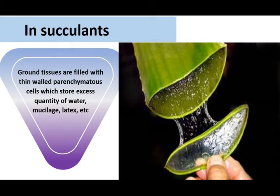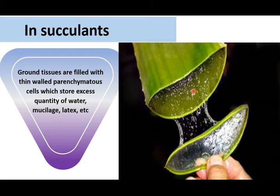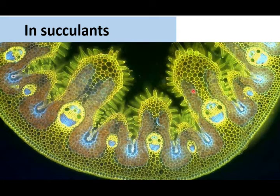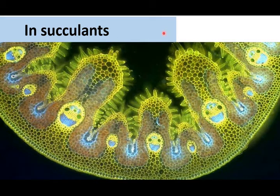Now we shall see the anatomical peculiarities in succulent stems and leaves. In succulent stems and leaves, the ground tissue is filled with thin-walled parenchyma cells which store excess water, mucilage, and latex, making the stem swollen and fleshy. In Aloe leaf sections, you can see mucilage oozing out when cut. In succulent leaves, spongy parenchyma develops extensively to store water and mucilage. The epidermis is single-layered and compact, hypodermis is present, and a chlorenchymatous sheath surrounds the vascular bundle, with large central parenchyma cells storing water as mucilage or latex.